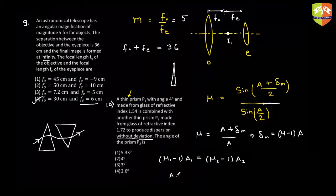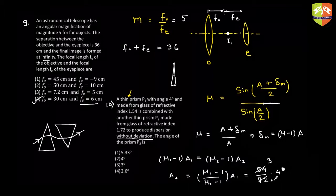The angle of the second prism is given by A2 = [(μ1 − 1)/(μ2 − 1)]·A1. With μ1 − 1 = 0.54, μ2 − 1 = 0.72, and A1 = 4°, we get 54/72 × 4 = 3°. So option 3 is correct. Any doubts on these two questions — type yes or no.